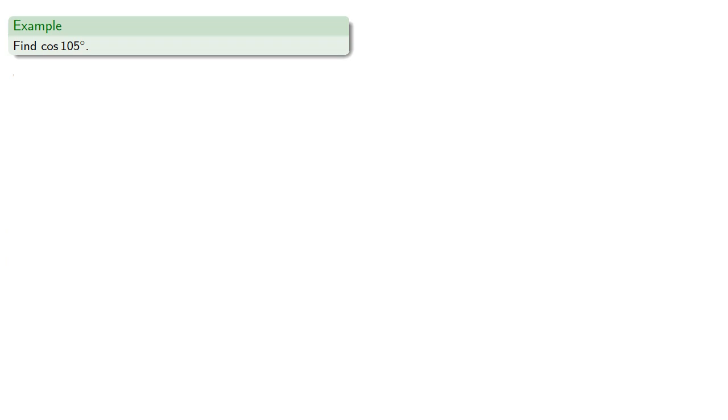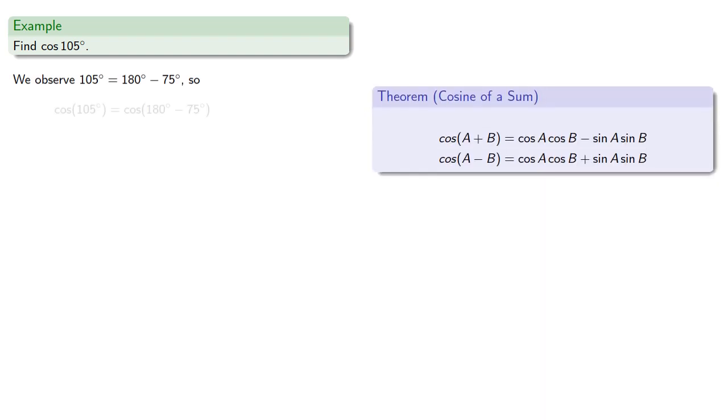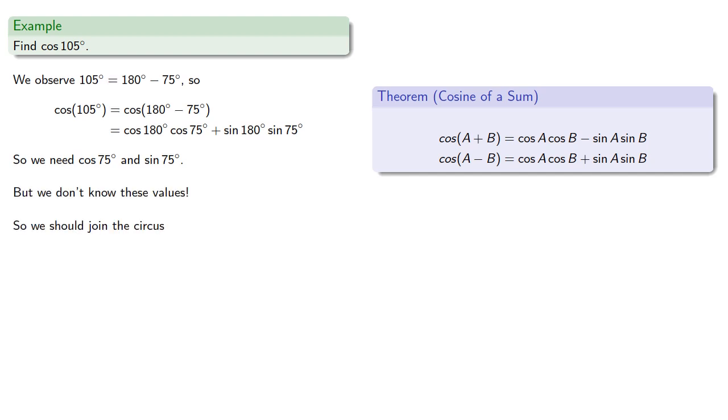Let's try to find cosine of 105 degrees, this time using a difference. We observe that 105 is 180 minus 75, so we can use our formula. But we need cosine of 75 and sine of 75, and we don't know these values, so we should try a different subtraction.